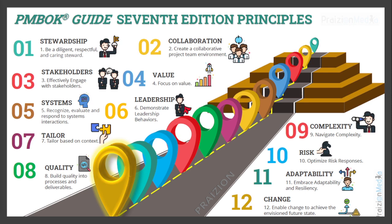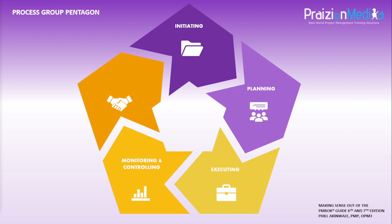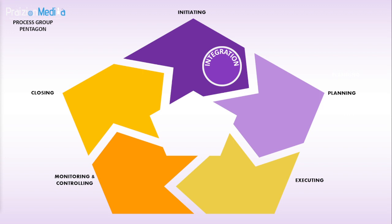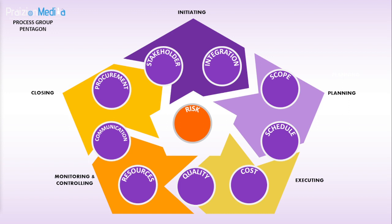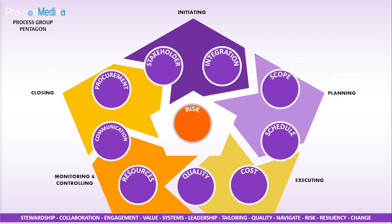That's the summary of the 12 principles of project management. You may recall from the 6th edition the five process groups: initiating, planning, executing, monitoring and controlling, and closing. Think about building on these five by understanding the knowledge areas as represented in the 6th edition, then seeing how they map to the 7th edition. All of the great stuff you may have learned from the 6th edition should rest solidly on the principles — stewardship, collaboration, all the way down to change.